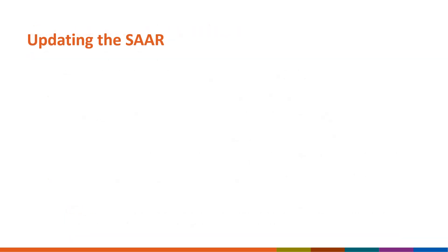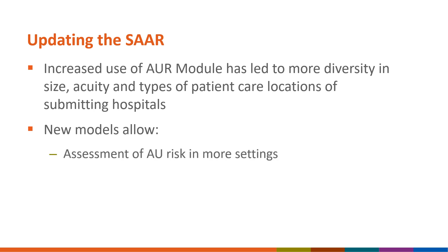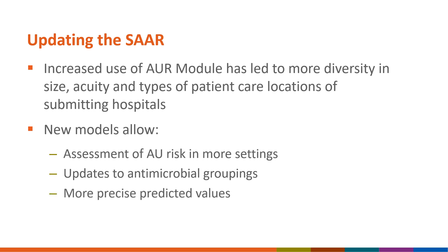Since the 2014 baseline, a lot has changed. As more and more facilities have adopted the AU option, there is more diversity in the size and acuity of submitting hospitals as well as the types of patient care locations. As of June 2019, over 1,300 hospitals participate in the AU option. Updating the baseline year using data submitted to NHSN in 2017 helps account for these changes. New prediction models allow us to increase the number of patient care locations modeled, assess AU risk in more settings, and update the antimicrobial groupings, all leading to greater precision when predicting antimicrobial use.